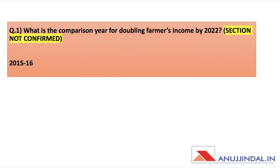Let's begin with the first question: what is the base year for doubling farmers' income? The ESI and ARD sections are somewhat overlapping, so the section for this question is not confirmed, but the answer is 2015-16, which is the base year for the doubling of farmers' income by 2022.